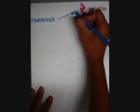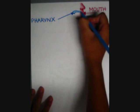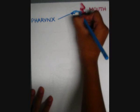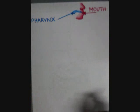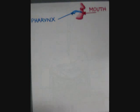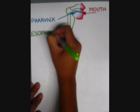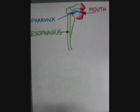Next is the pharynx. In the pharynx is where both food and air pass through. A flap of connective tissue called the epiglottis closes over the trachea when food is swallowed to prevent choking or aspiration.